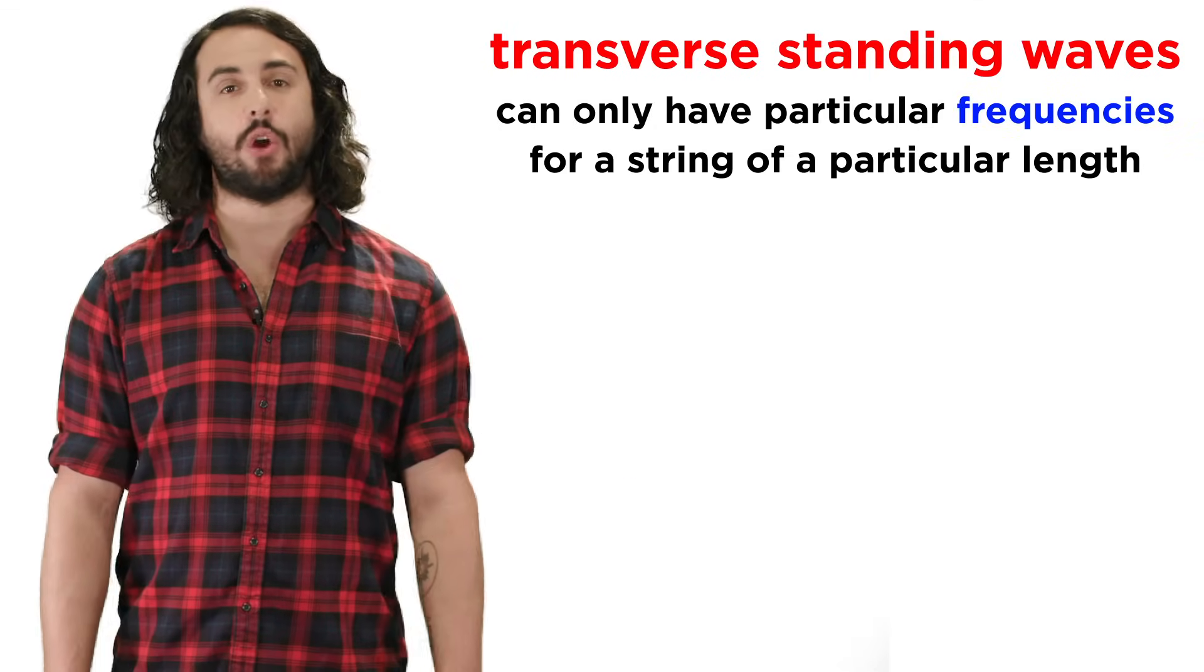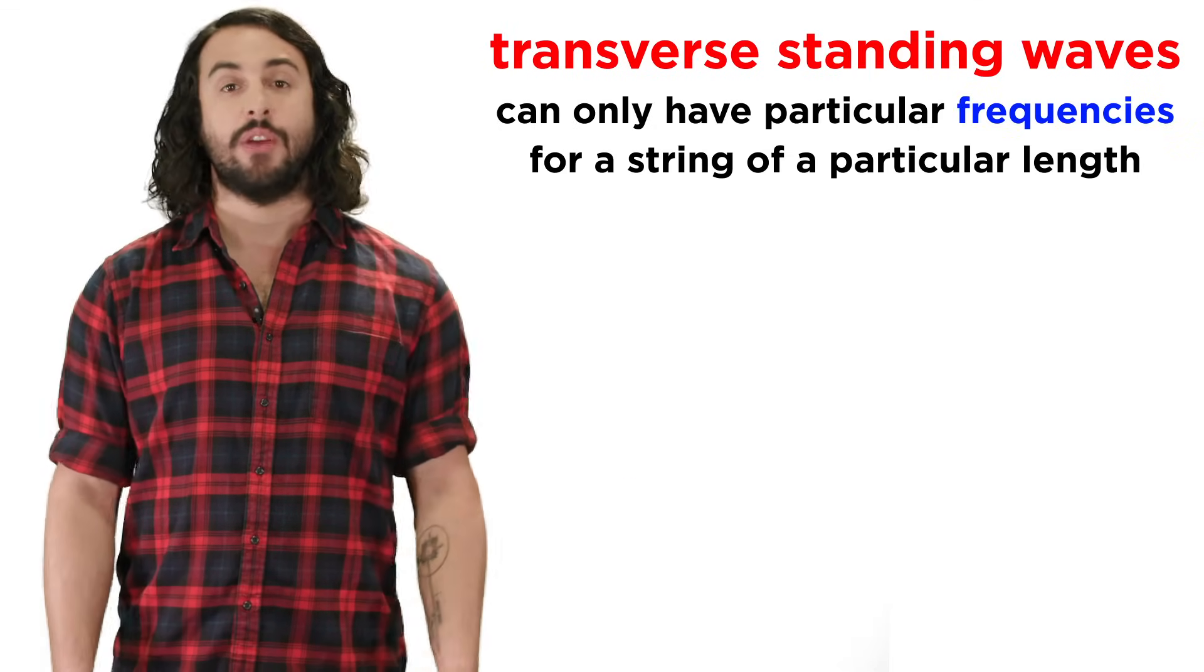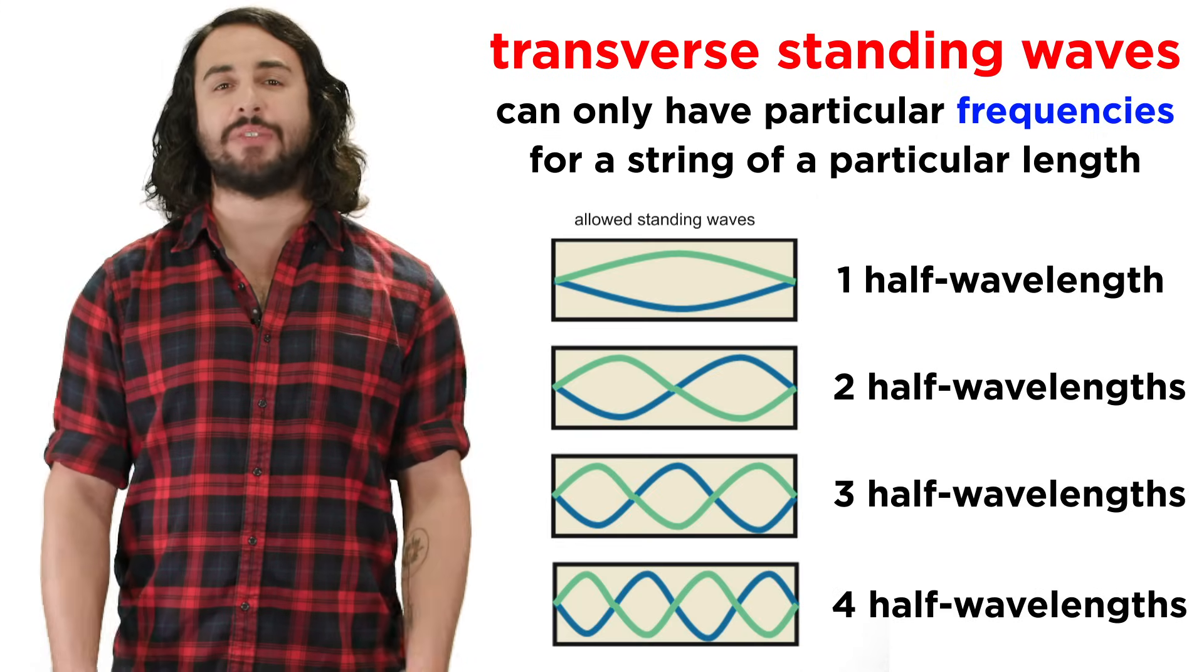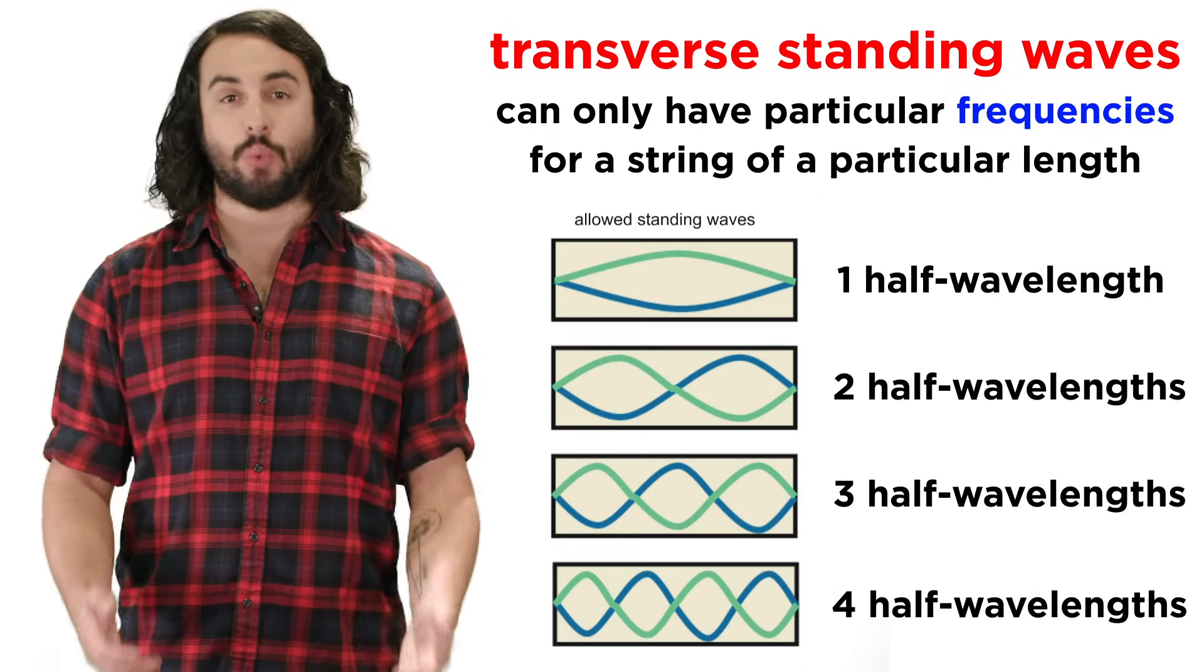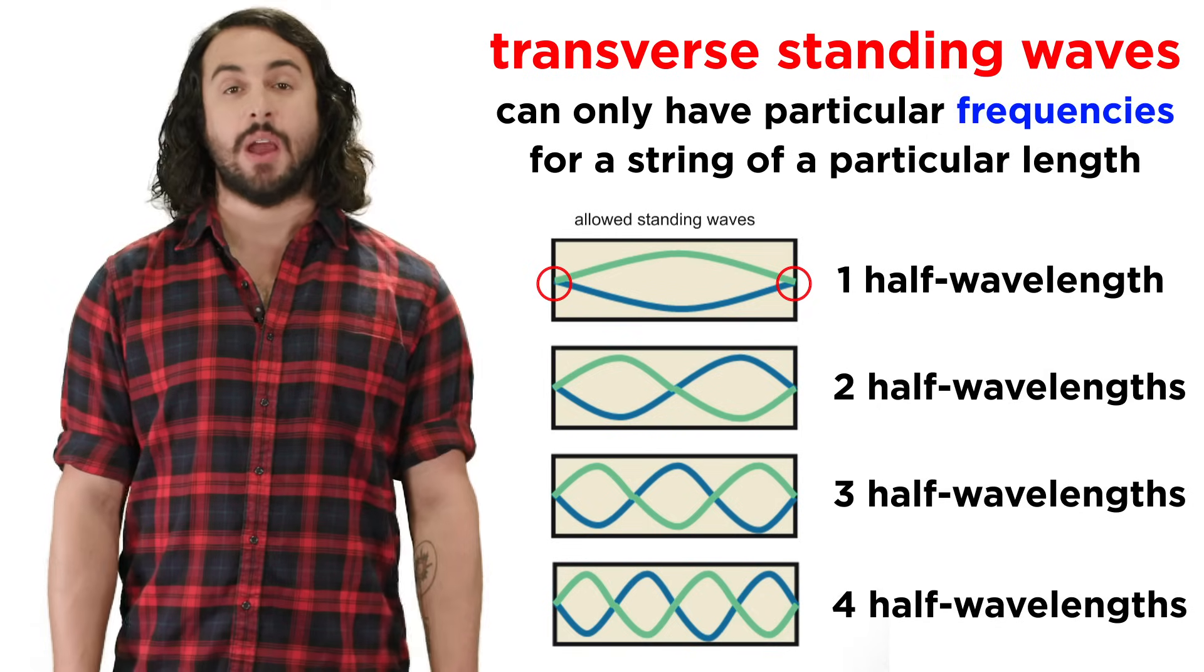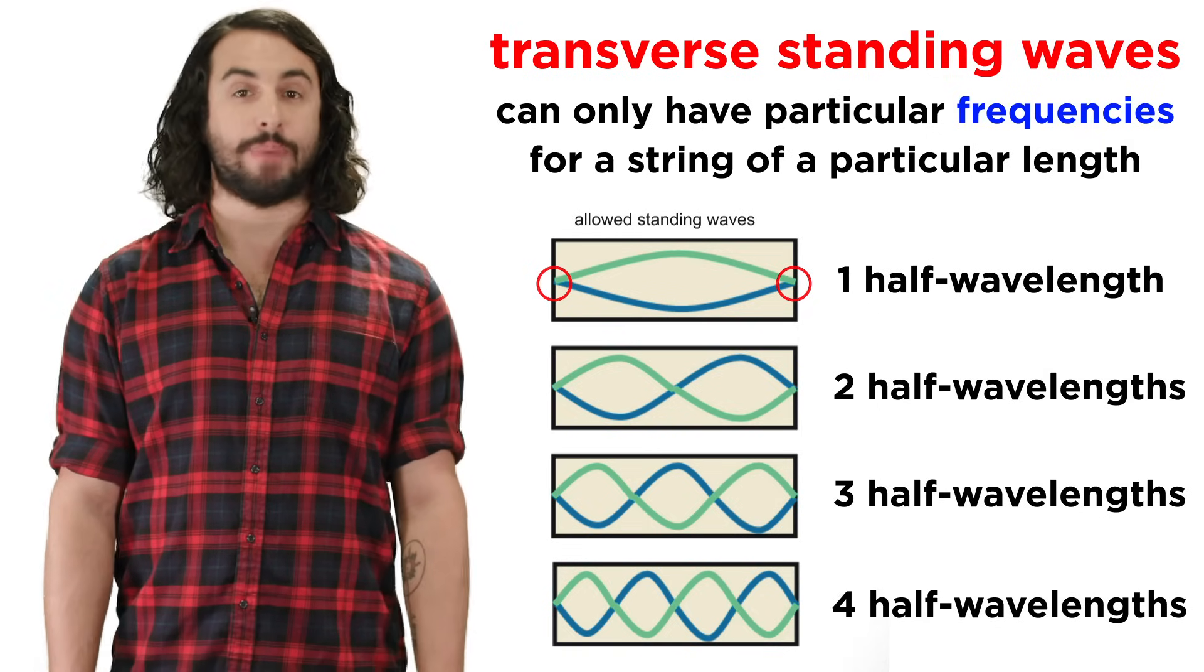These kinds of waves can only have particular frequencies for strings of a given length, because they can only have integer numbers of half wavelengths, since the waves must return to zero amplitude at both boundaries.